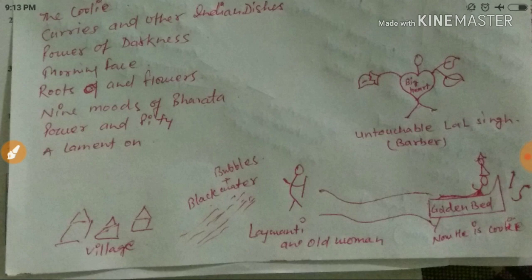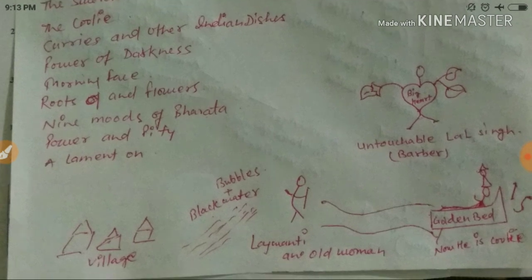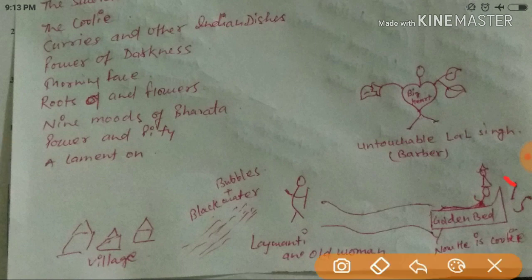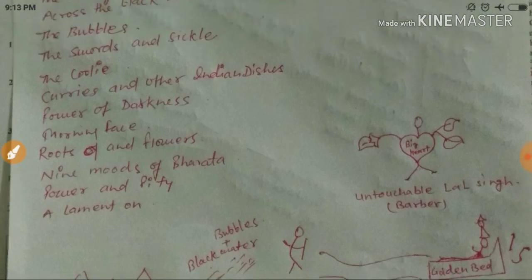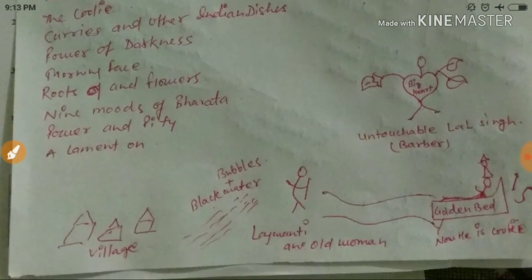The Prince is on the road with his golden bed. He has lost his kingdom and is now a coolie. He has only a golden bed, a sword, and a sickle. So from this part of the story you can remember: Reflections on the Golden Bed, Coolie, The Sword and the Sickle. I hope this story helps you remember Mulk Raj Anand's works.